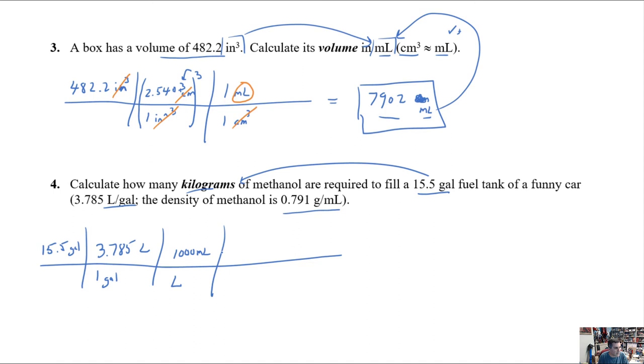And then we can say, okay, now we can go from milliliters. So we need to put milliliters on the bottom. So we put grams on the top, 0.791 grams per milliliter. Now that's a measured quantity. Someone actually measured the density. So we need to pay attention. That has three sig figs. And then finally, we want to go from grams to kilograms. So there are a thousand grams per kilogram. And that's again, a prefix kind of thing. Kilo is a definition. So we don't worry about sig figs there.